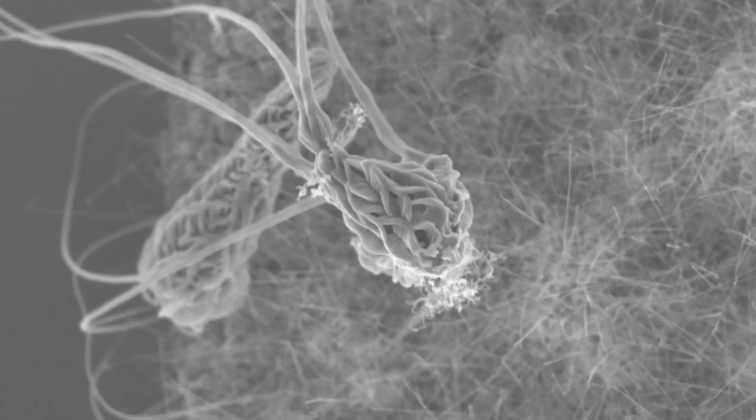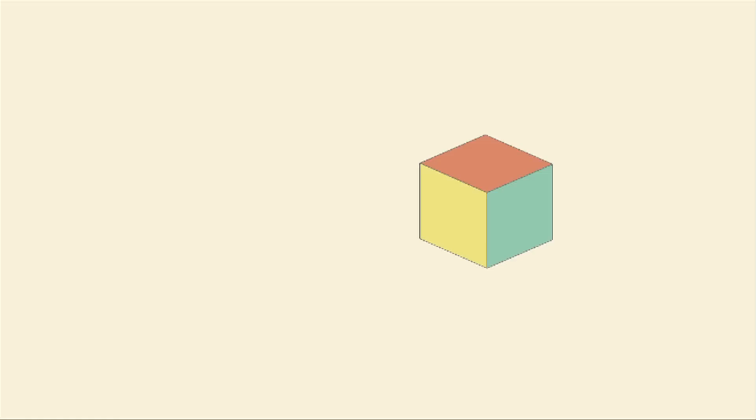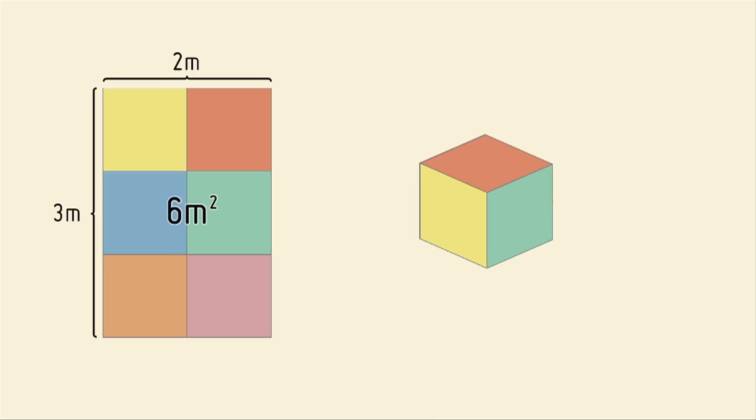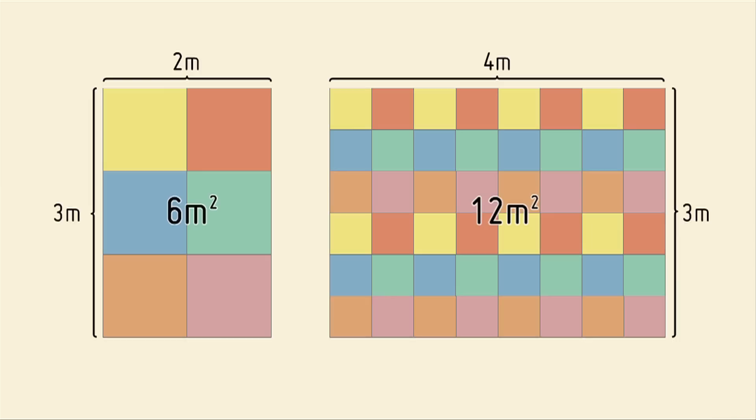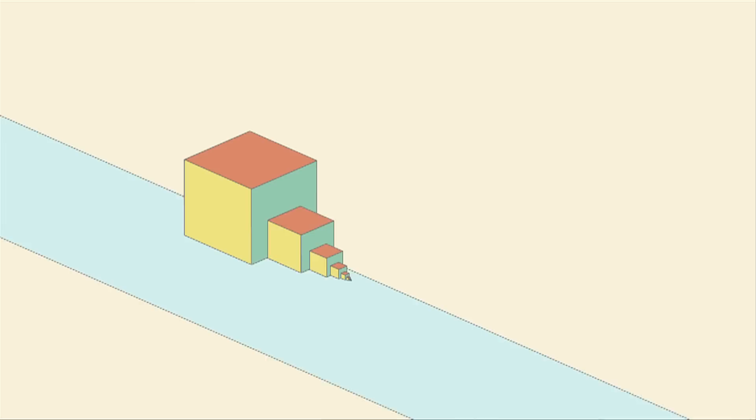The nanoworld isn't just unusual looking — things behave differently there too. One reason for this is surface area. If you take a cube and lay the surface flat, you can see how much of that cube can react with the outside world. If you divide the same cube into 8 little cubes, the surface area is twice as big. If you keep making smaller cubes, the surface area becomes immense. More surface means more area for reactions.